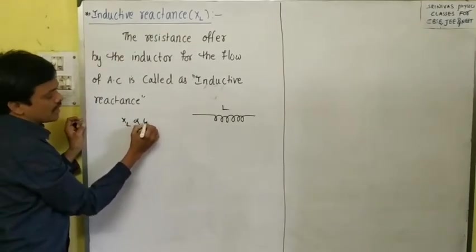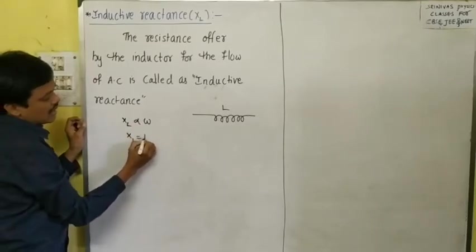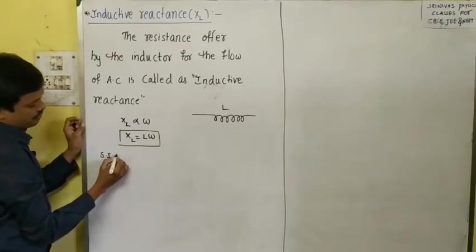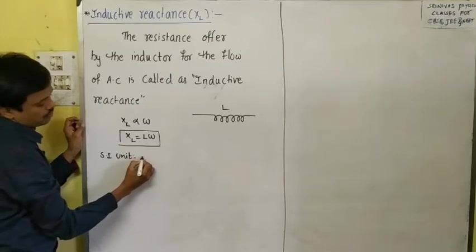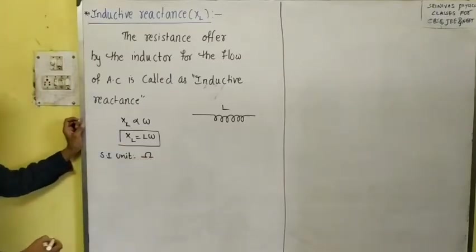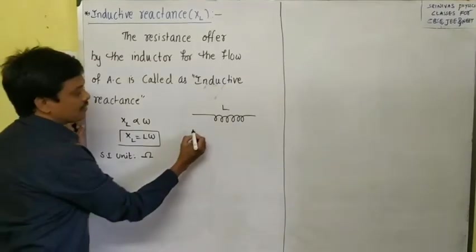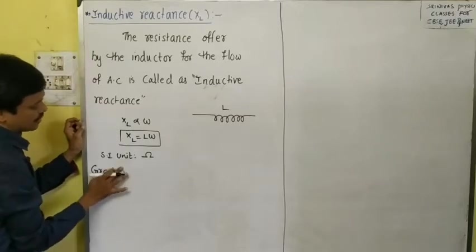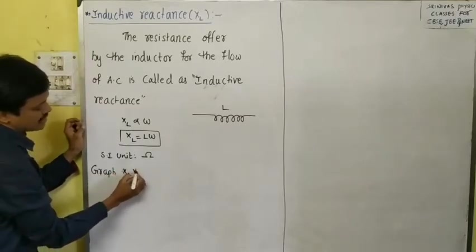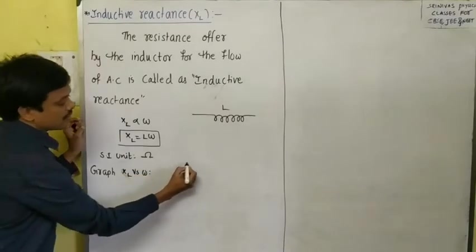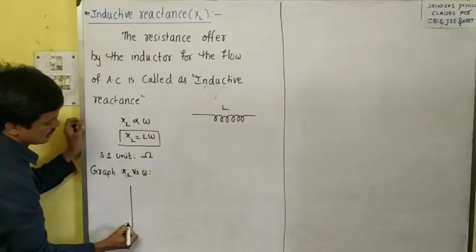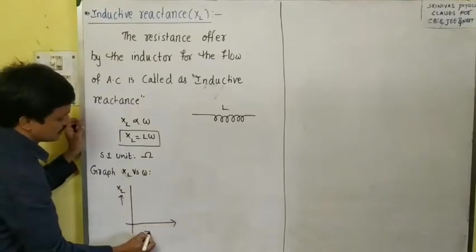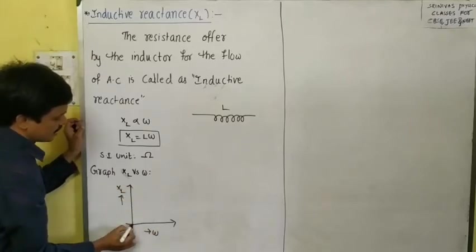Inductive reactance is directly proportional to omega, the angular frequency. Its formula is XL = Lω, and its unit is ohm. If you want to draw the graph between XL and omega — that is XL versus omega — you will get a straight line graph like this, with XL on one axis and omega (frequency) on the other.